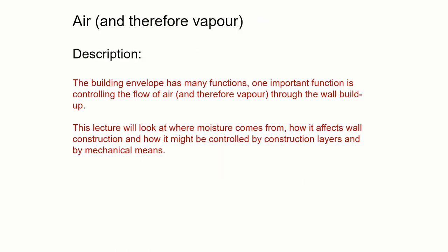We're going to be looking at air and therefore vapor. The building envelope has many functions, and one of those is controlling the flow of air and therefore vapor through the wall buildup. This lecture will look at where moisture vapor comes from, how it affects wall construction, and how we might control it through construction layers and mechanical means.